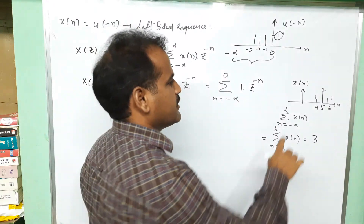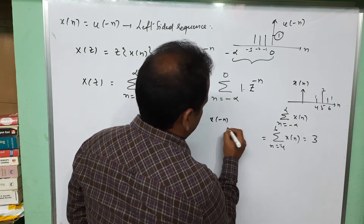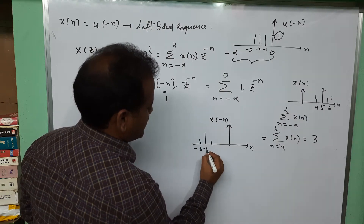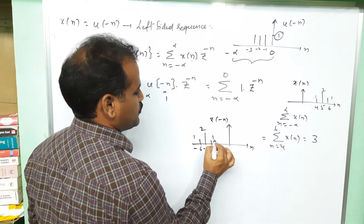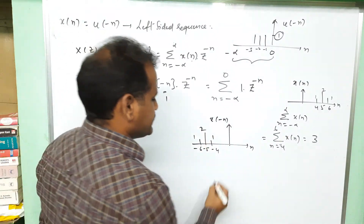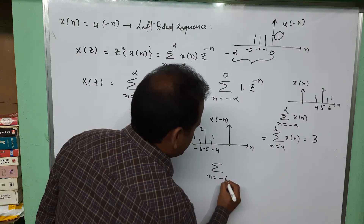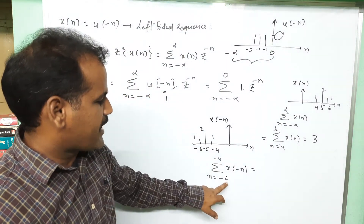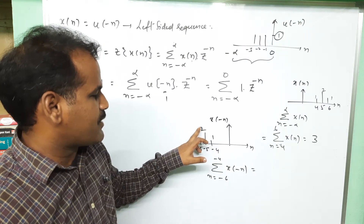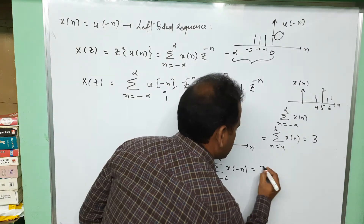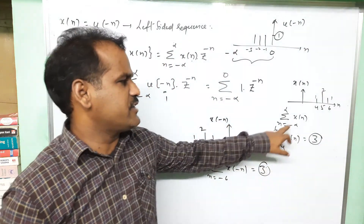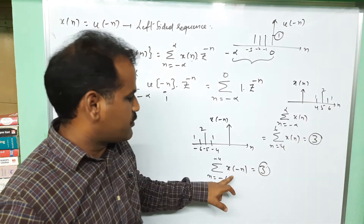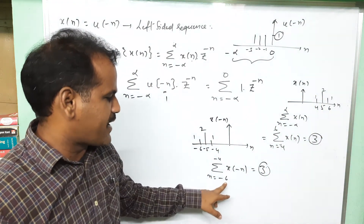Now consider the reflection of this signal, x of minus n. The reflected signal exists from minus 6 to minus 4 with the same amplitudes 1, 2, 1. The summation from n equals minus 6 to minus 4 of x of minus n gives 1 plus 2 plus 1, which also equals 3. So the summation of the reflected signal equals the summation of the original signal — both equal 3.